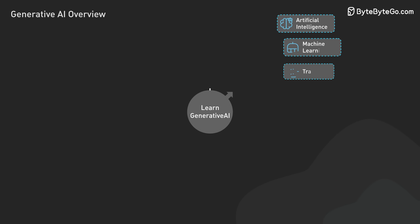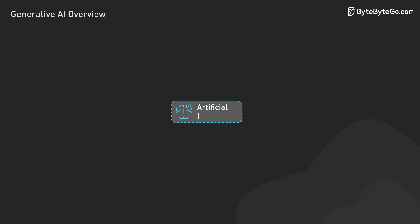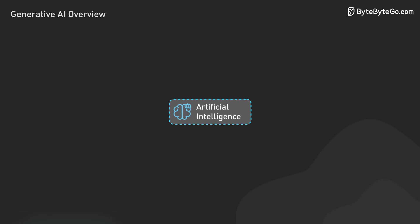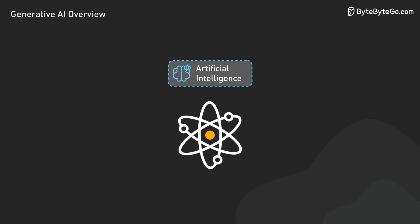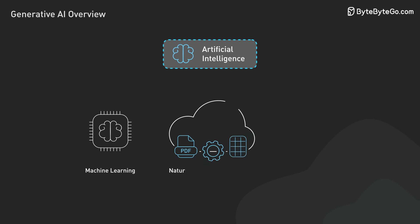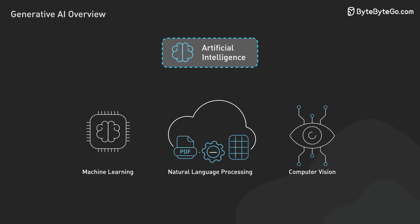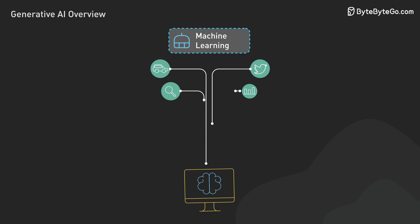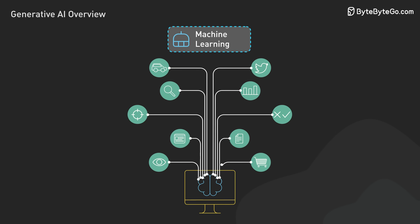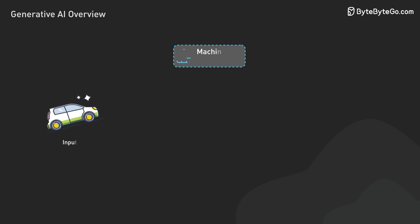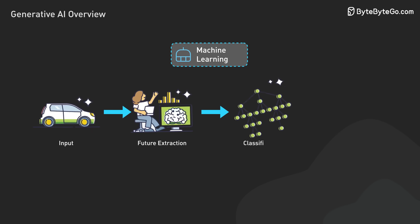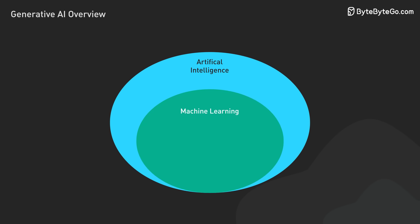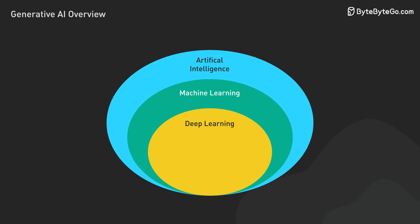Let's start with understanding the Gen AI terminologies. AI refers to the development of computer systems that can perform tasks that typically require human intelligence. It's a discipline like physics, and includes various subfields such as machine learning, natural language processing, computer vision, and more. Machine learning is a subset of AI that focuses on enabling computers to learn and improve from data without being explicitly programmed. It involves training models on data to recognize patterns, make predictions, and take actions. Deep learning uses artificial neural networks and is a subfield of machine learning.